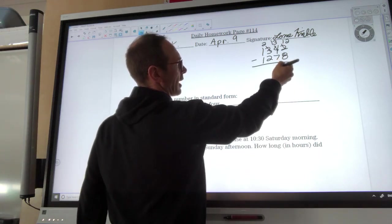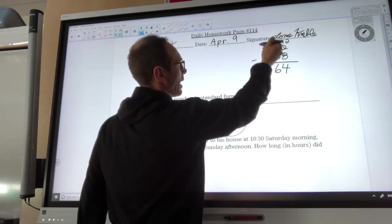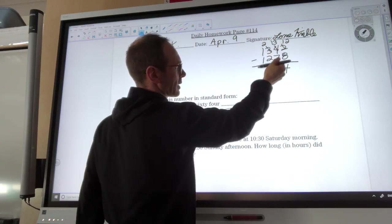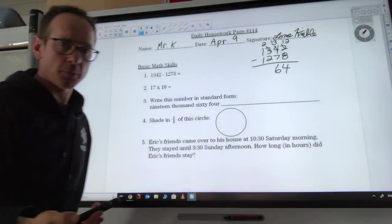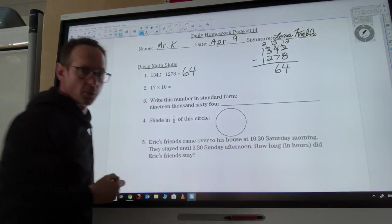Now I have 13 take away 7, that gives me 6. So I have 64. Then this is 200 minus 200, which is nothing, and 1,000 minus 1,000, which is also nothing. So all I'm left with is 64. My answer is 64, and I said it was gonna be less than 100, so it makes sense.